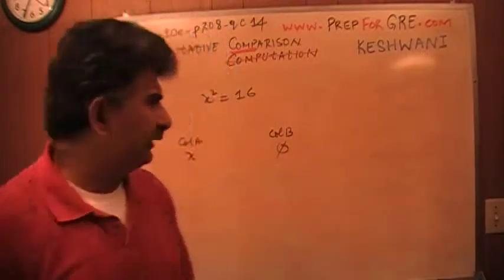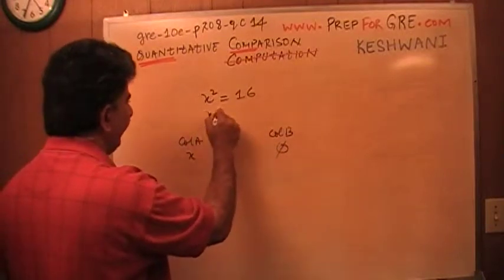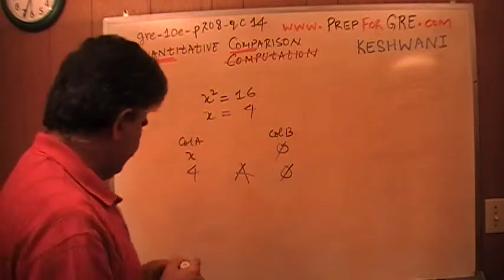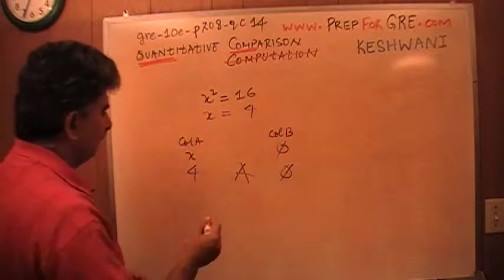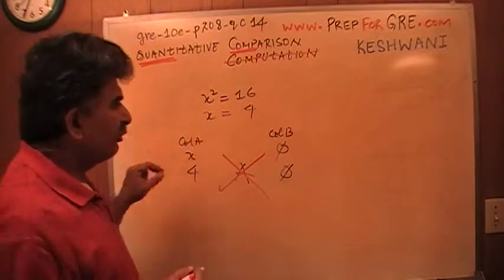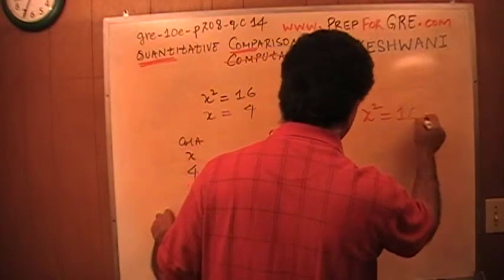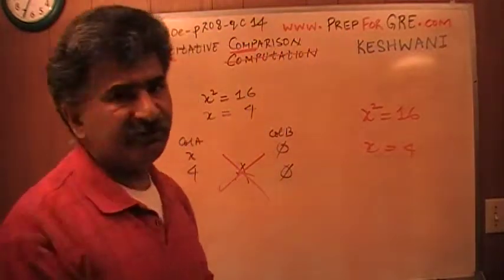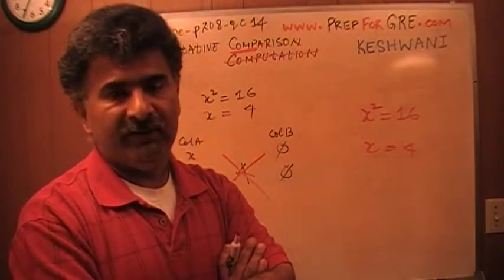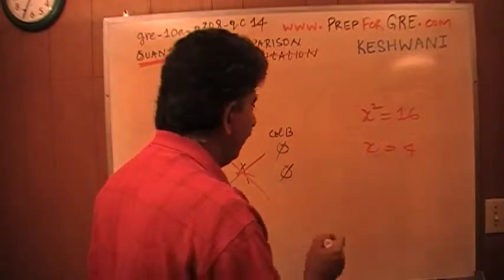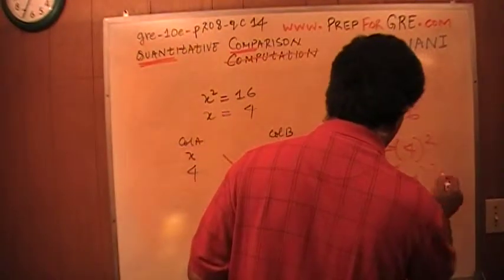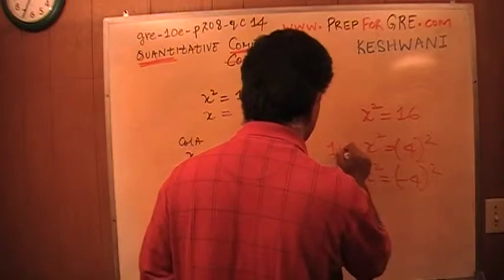So what did you pick for the answer? If you are sitting there saying that X squared equals 16, therefore X must be 4, and since column B is 0 the answer is A — I am sorry to say that is incorrect. We do not know that if X squared equals 16, then X equals 4. That statement is incorrect.